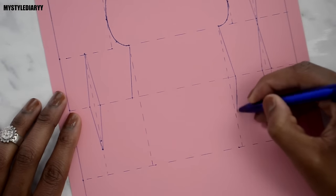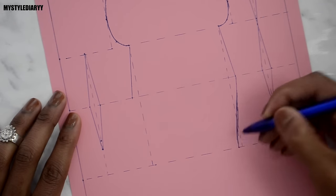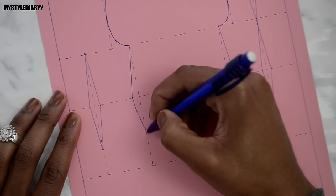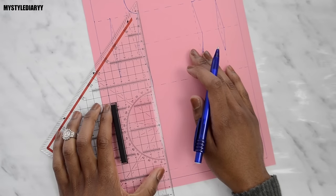From the waist point draw a curved line to the hip point. From that point draw a vertical line downwards.